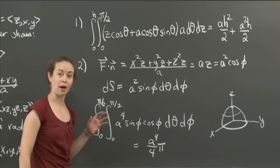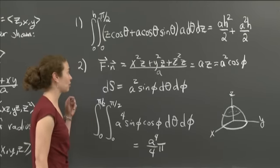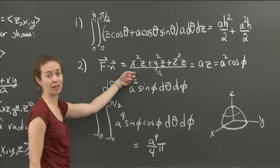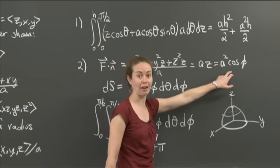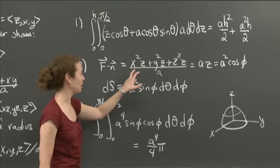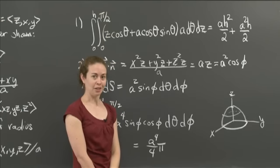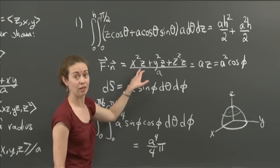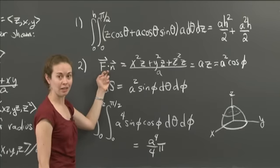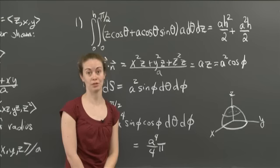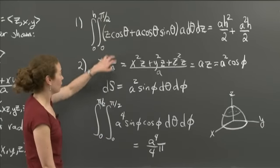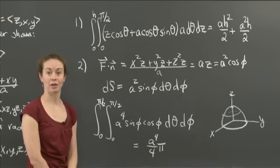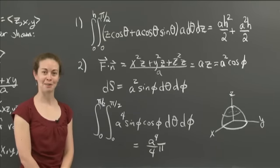In both problems, we computed the flux of a vector field through a surface using the same approach: compute f dot n in x, y, z variables first, then convert to the appropriate parameterization for the surface. Then determine ds, set the bounds for the parameters, and integrate. Keeping x, y, z at first makes simplifications — like x² + y² + z² = a² — much more visible before switching coordinates.